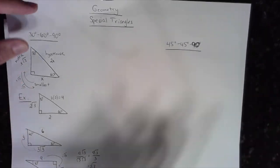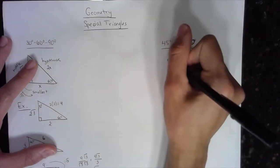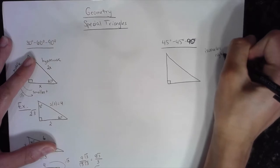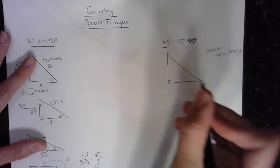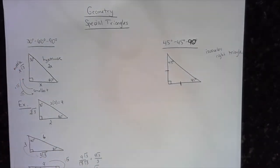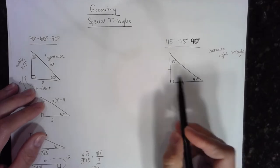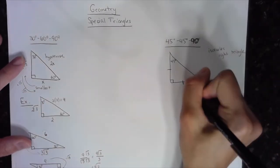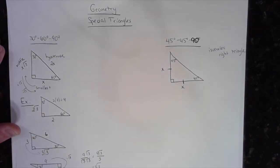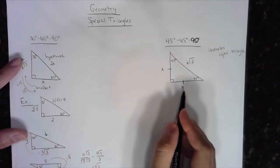Now let's look at the 45-45-90 degree right triangle, also called an isosceles right triangle. Isosceles means two equal sides, so both legs are equal, and each non-right angle is 45 degrees. The two equal sides are opposite the equal angles. If each leg is x, then the hypotenuse is x times the square root of 2.